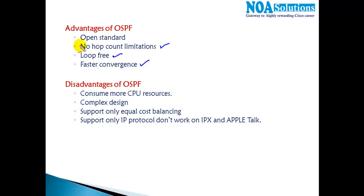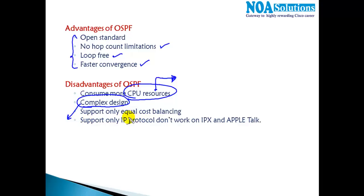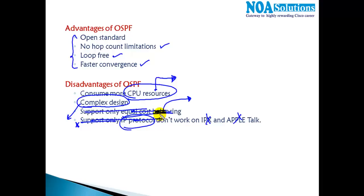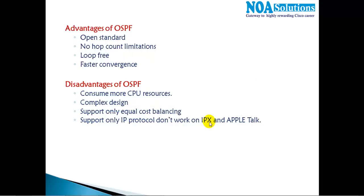The major disadvantage of OSPF is that it utilizes more CPU and memory resources for maintaining the link state database. The design is more complex and complicated compared to other protocols. It supports only equal-cost load balancing, whereas EIGRP supports unequal-cost load balancing as well. Overall, the main disadvantage is that OSPF is more complex to configure, design, and implement, and uses more CPU resources in maintaining the database.